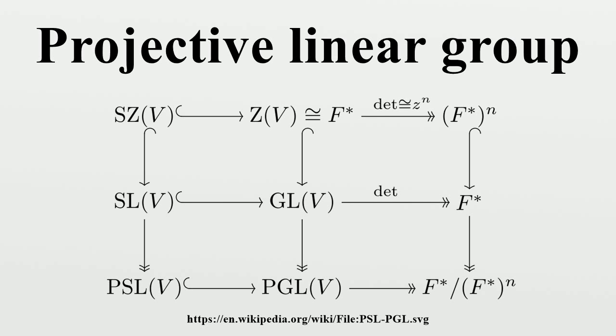Specifically, for n equals 2, all points are collinear, so the collineation group is exactly the symmetric group of the points of the projective line. And except for F_2 and F_3, PGL is a proper subgroup of the full symmetric group on these points.